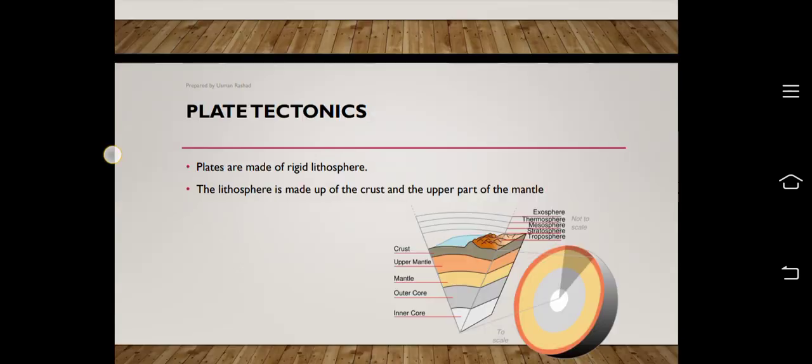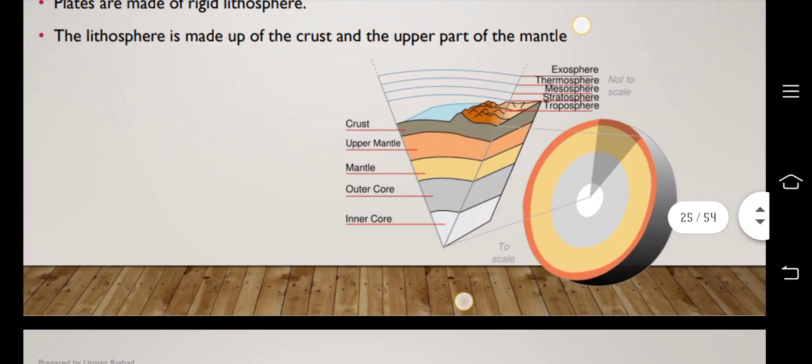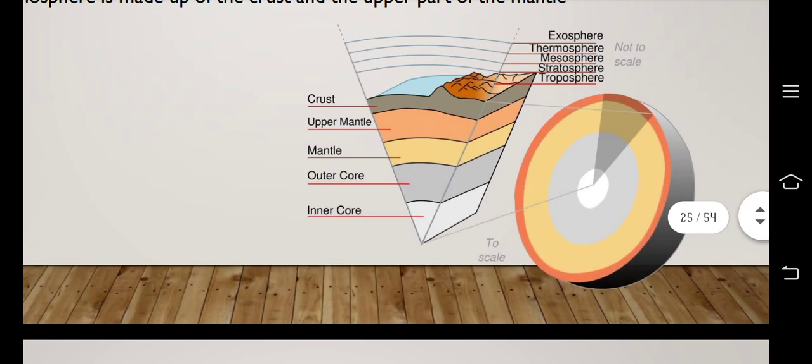As you can see in this diagram, the crust is the outermost layer of the earth, then comes upper mantle, then lower mantle, then outer core, and then the inner core. That is how the internal structure of the earth is explained. I hope I have delivered this lecture in a very convenient and easy way.